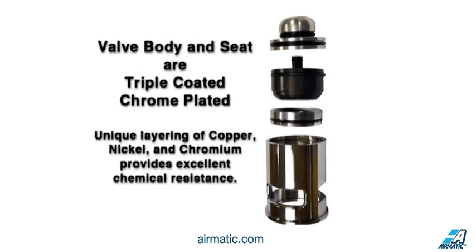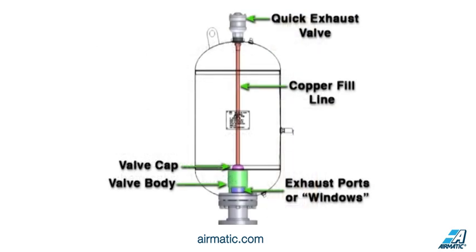The Global valve body and seat are triple-coated chrome plated. This unique layering of copper, nickel, and chromium provides excellent chemical resistance as well as superior protection against abrasion and wear. The valve cap is not exposed to the environment. It is one piece with an O-ring check valve. The cap is held in the valve body with a simple retaining ring — no screws, no other fasteners. The copper fill line is held in the cap by the rigidity of the line itself and sealed in the cap by an O-ring.